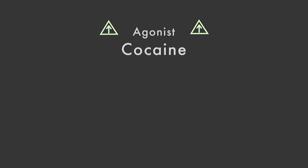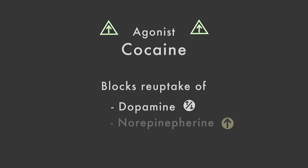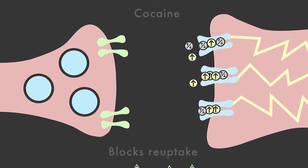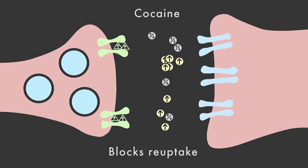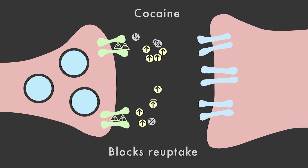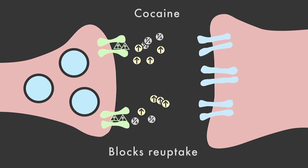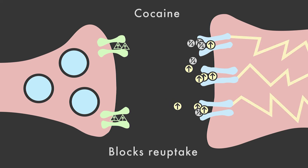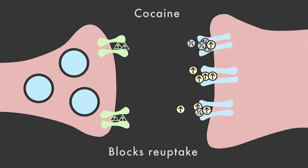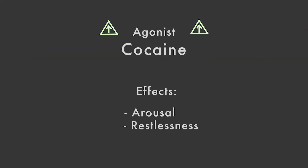Cocaine, for example, is an agonist. It works by blocking the reuptake of dopamine, norepinephrine, and epinephrine into the presynaptic molecules. The effect is arousal throughout the body, restlessness, and in some cases euphoria.